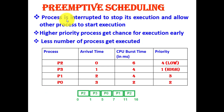Now let us understand what preemptive scheduling means. Preemption means interruption. If a process is interrupted to stop its execution and allow other processes to start execution, that is called preemptive scheduling. If a higher-priority process enters the system, the current ongoing process will be halted and the new process will be given a chance for execution. Since it is interrupting the system, fewer processes get executed.